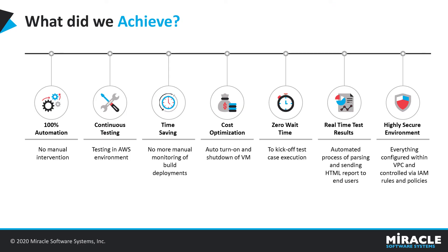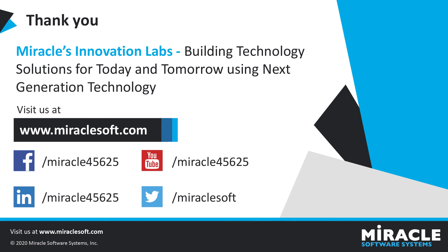So what did we achieve with this session? We achieved 100% automation with no manual intervention required at any stage. We achieved continuous testing in an AWS environment. We achieved time savings as there is no more manual monitoring of build deployments. We achieved cost optimization by automatically turning on and shutting down the Windows EC2 instance. We achieved zero wait time to kick off test case execution. We achieved real-time test results through automated parsing and sending of the HTML report to end users, all done in a highly secure AWS environment within a VPC network controlled by IAM rules and policies.